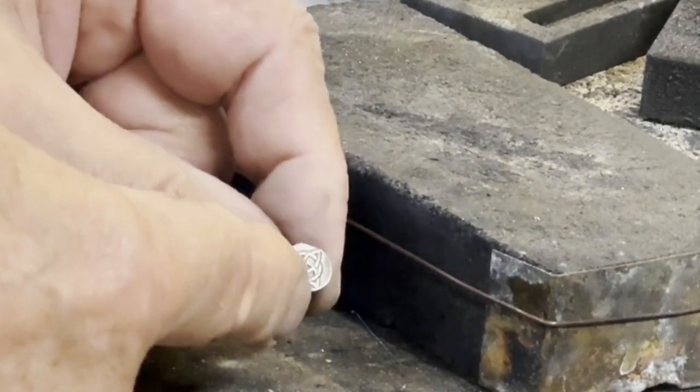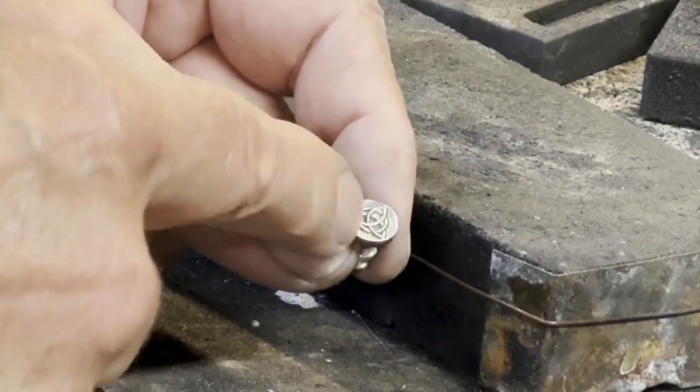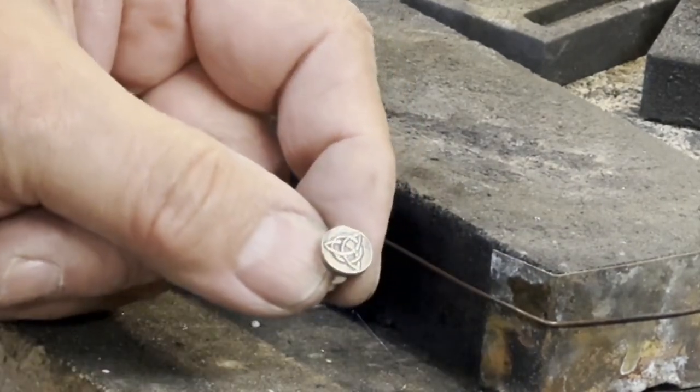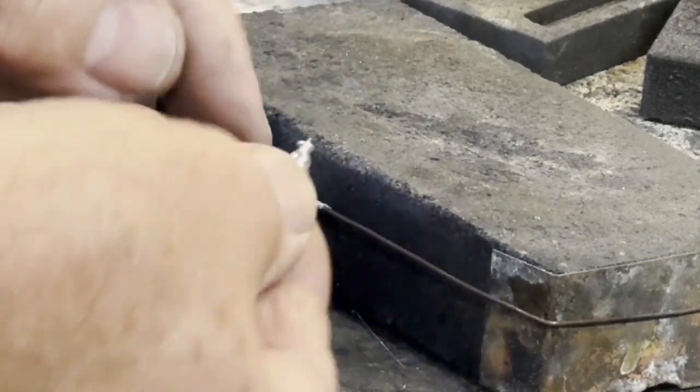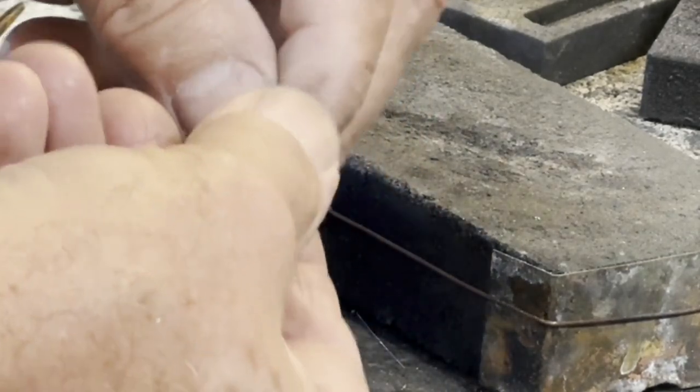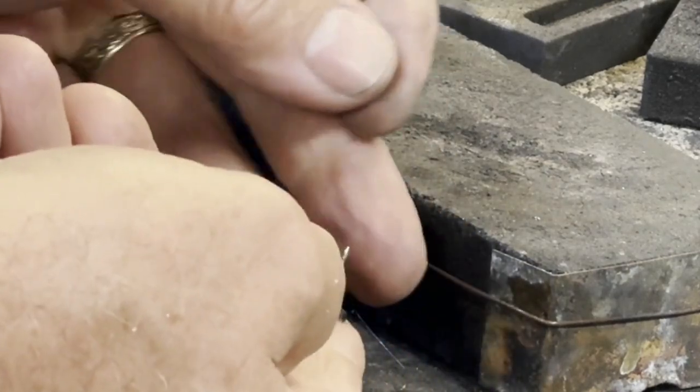Now, all I did was polish it a little bit more, add some patina, which is an oxidation process. And I'm just going to pair it with a little friction clutch on the back so that it could be worn as a pin.